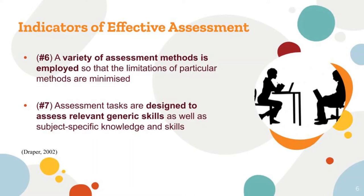Our group has identified a few indicators of effective assessment by Draper 2002 that Ms. Educator has failed to use throughout her course. Indicator number six: a variety of assessment methods is employed. Ms. Educator only describes using one method of assessment, which is summative in nature, done through a series of online multiple choice questions. Indicator number seven: assessment tasks are designed to assess relevant generic skills, as well as subject-specific knowledge and skills. Ms. Educator does not allow students to exhibit other skills learned, just rote and factual knowledge.